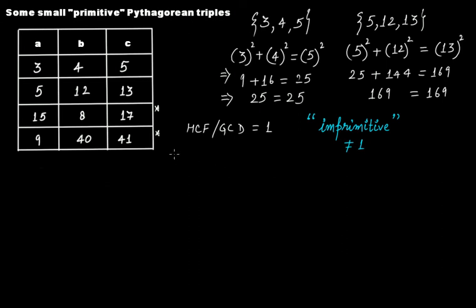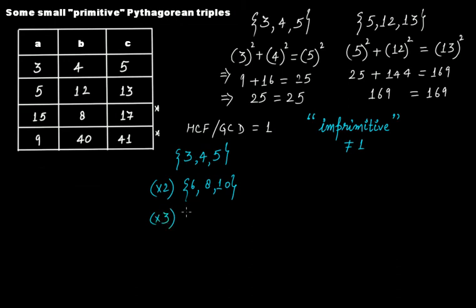Let's take the 3, 4, 5 Pythagorean triple. If we multiply it by 2 we get 6, 8, and 10. If we multiply by 3 we get 9, 12, and 15. These two sets of three positive integers are imprimitive Pythagorean triples because in the first case the highest common factor is 2, and in the second case it is 3.